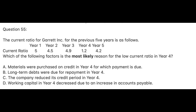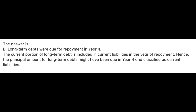Question 55. The current ratio for Garrett Inc. for the previous 5 years is as follows: Year 1: 4.5, Year 2: 4.9, Year 3: 1.2, Year 4: 4.2, Year 5. Which of the following factors is the most likely reason for the low current ratio in year 4? The answer is B: Long-term debts were due for repayment in year 4. The current portion of long-term debt is included in current liabilities in the year of repayment. Hence, the principal amount for long-term debts might have been due in year 4 and classified as current liabilities.